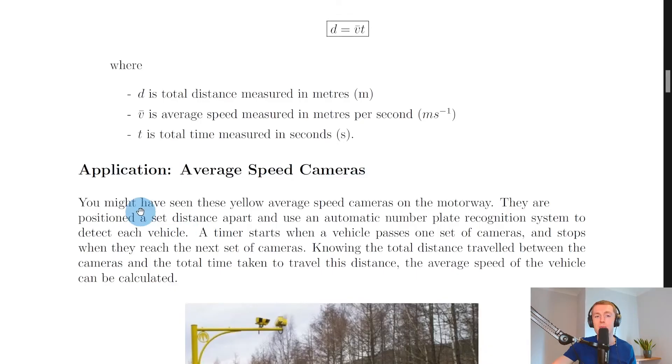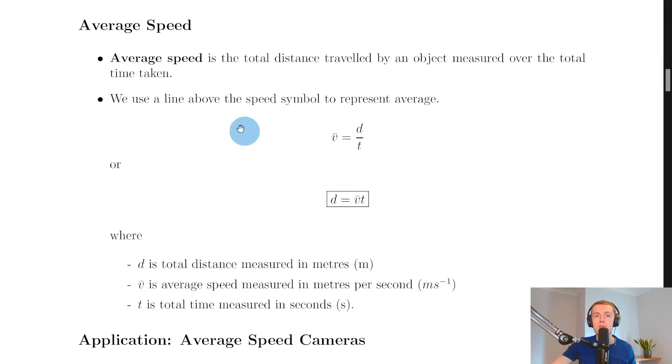So firstly, we define average speed as the total distance traveled by an object measured over the total time taken. And we use a line above the speed symbol to represent average.